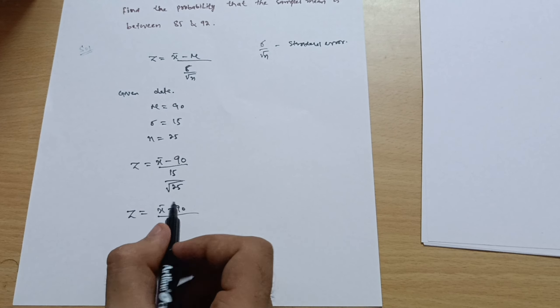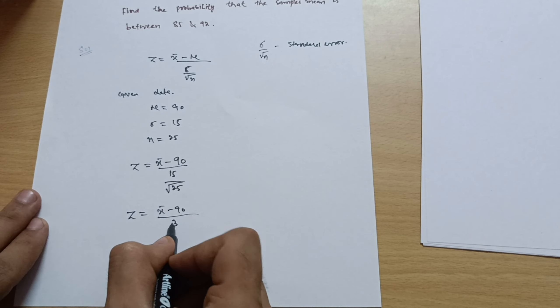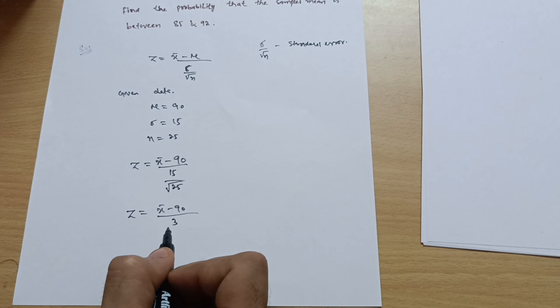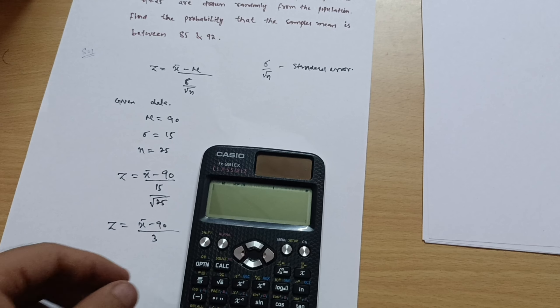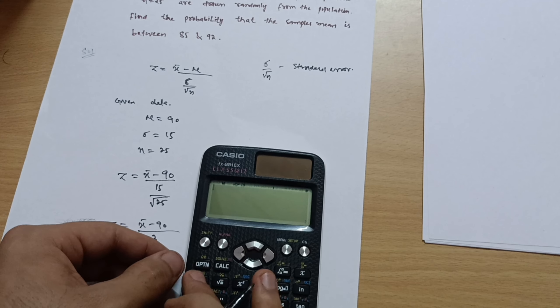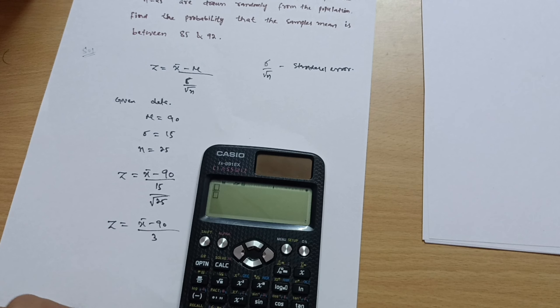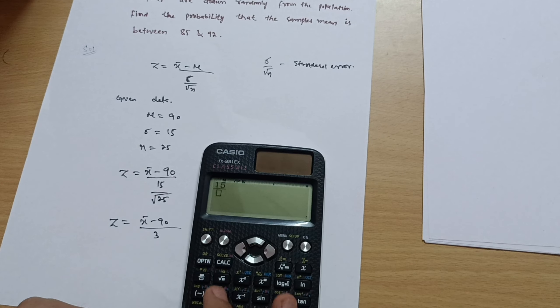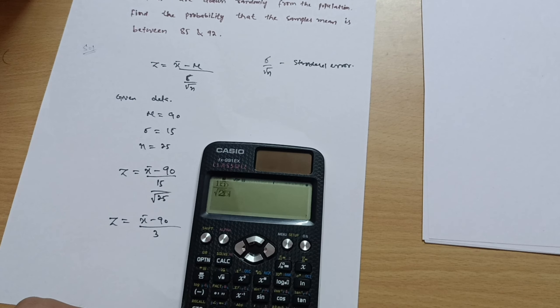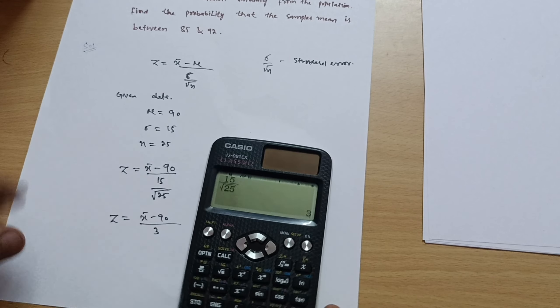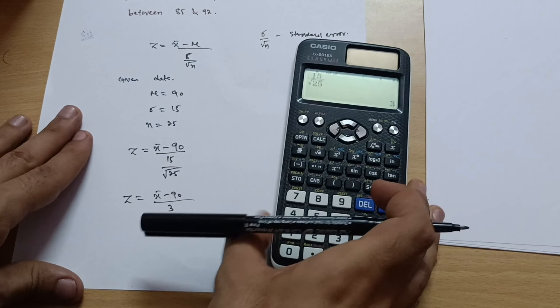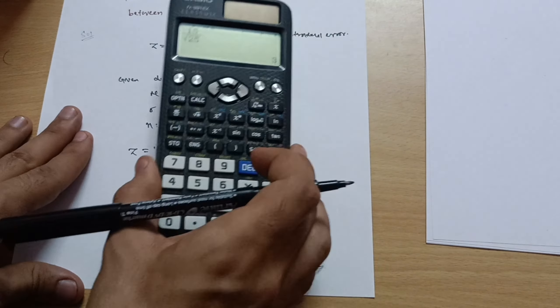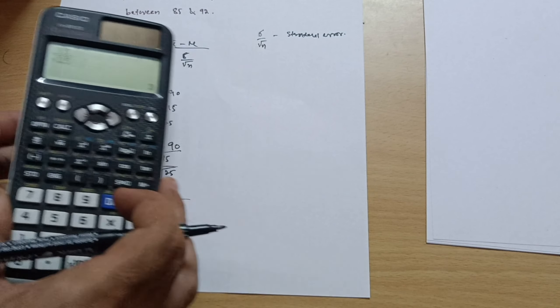Calculating 15/√25 on the calculator: √25 = 5, so 15/5 = 3. Therefore the standard error is 3, and the formula becomes z = (x̄ − 90) / 3.